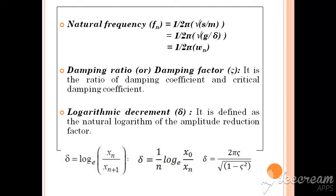The ratio between the damping coefficient and the critical damping coefficient is termed as the damping ratio or damping factor (η). Logarithmic decrement is defined as the natural logarithm of the amplitude reduction factor: δ = ln(Xn / Xn+1), or δ = (1/n)·ln(X0 / Xn), where n is the number of cycles considered, X0 is the initial amplitude, and Xn is the amplitude at the nth cycle. Also, δ = 2πη / √(1 − η²).